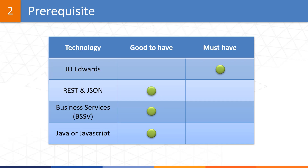We expect you to be proficient with Oracle JD Edwards, meaning you must have some experience with JDE in the capacity of either a technical or functional role. For other related technologies, it's good if you have some background with REST and JSON technologies, which serve as the core components on which AIS is built. If you don't have any experience with REST and JSON, don't worry — we are here to help you learn these technologies.